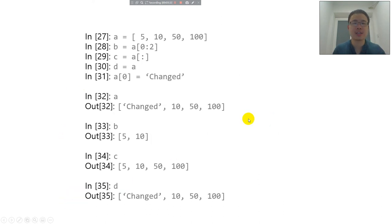Here is a summary of slicing and cloning. You have A equals this list: 5, 10, 50, 100. B slices two elements of A. C is the entire clone of A. And D is the alias of A. When you change the first element of A, you find that A is changed, but B and C are not changed, while D, the alias of A, has been changed.